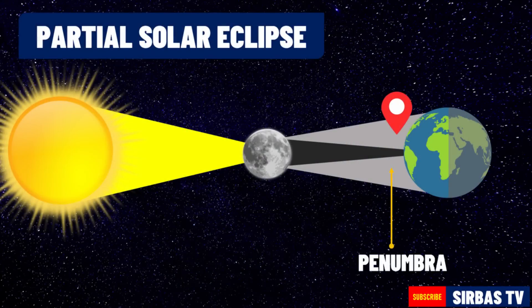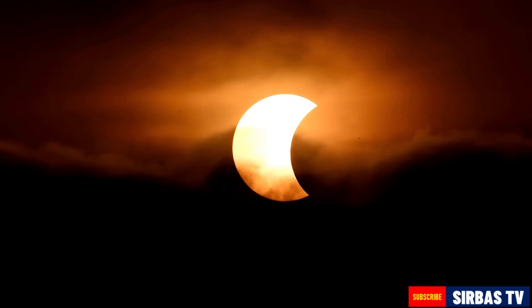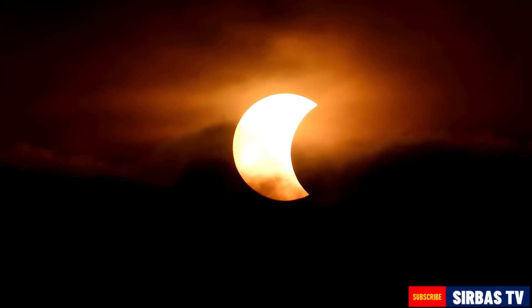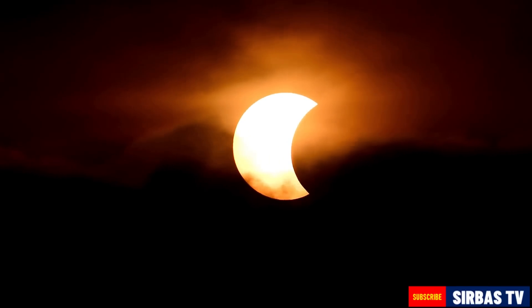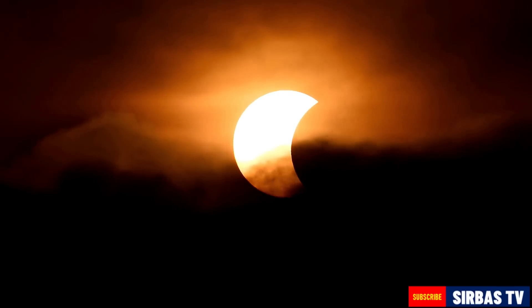On the other hand, if your place is located on the penumbra of the Moon's shadow, you will experience a partial solar eclipse. This occurs when the Sun and Moon are not exactly in line, and the Moon only partially obscures the Sun. The Moon only covers part of the Sun's light.